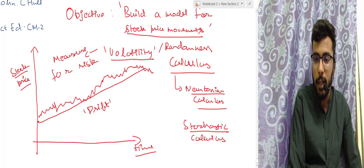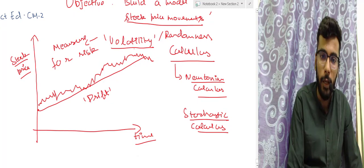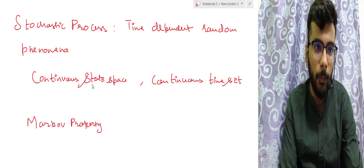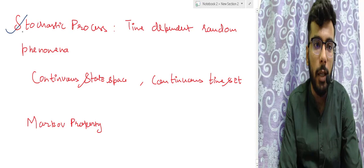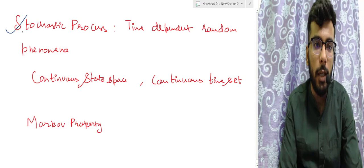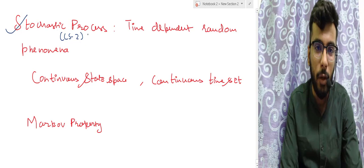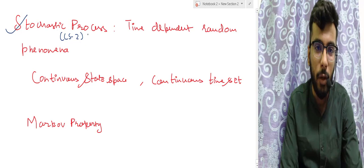Now let's try to construct the mathematical model. First, you need to know about stochastic processes, which were discussed in subject CS2. If you haven't studied CS2, you can watch my lecture on stochastic processes — that's the first lecture of CS2. Apart from that topic, no other topic from CS2 is required for CM2. So even if you have not studied CS2, you can do CM2.